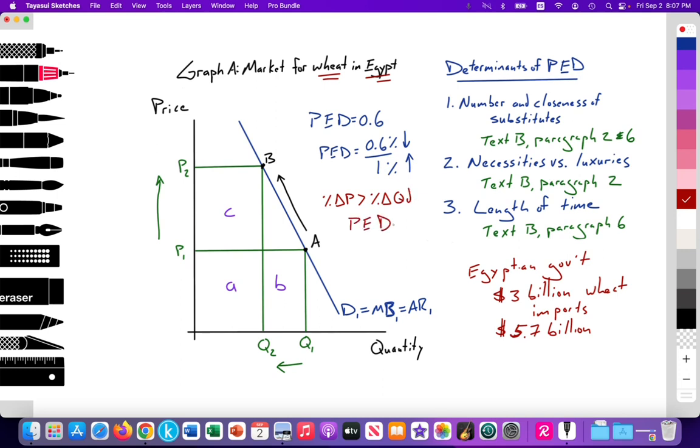We notice that the percent change in price is greater than the percent change in quantity demanded, meaning that the PED value for wheat and food in general is less than one because of the determinants of PED, including the number and closeness of substitutes for the Egyptian people due to cultural tastes, very dependent on wheat as their main food intake, according to Text B, Paragraphs 2 and 6, due to the lack of substitutes or alternatives for countries to find alternatives in the global market, because it's not just wheat prices are rising, but many cereal grain prices are rising as substitutes for wheat.